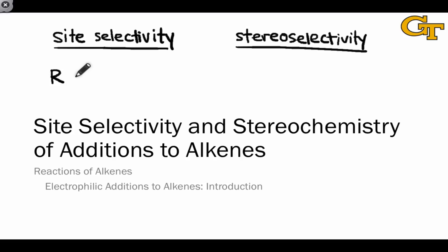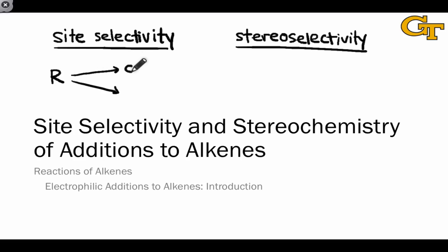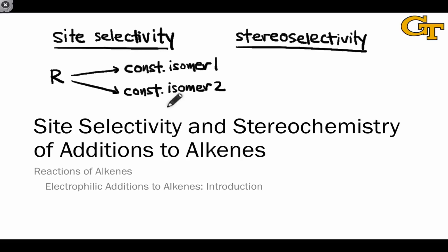Site selectivity refers to a situation in which a reaction can form one of two possible constitutionally isomeric products. A site selective reaction is one in which one of the two possible constitutional isomers is heavily favored over the other.